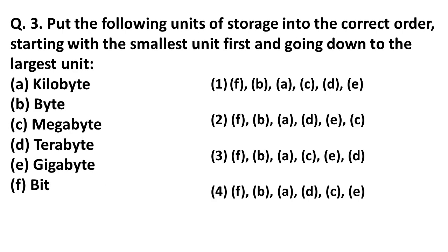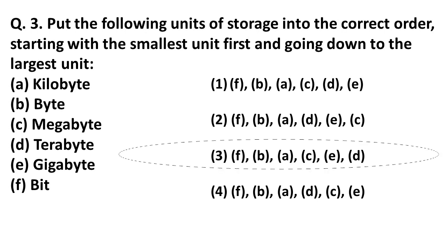The next question: put the following units of storage into the correct order, starting with the smallest unit first going down to the largest. The correct order is: bit, byte, kilobyte, megabyte, gigabyte, terabyte. The correct answer is option 3.